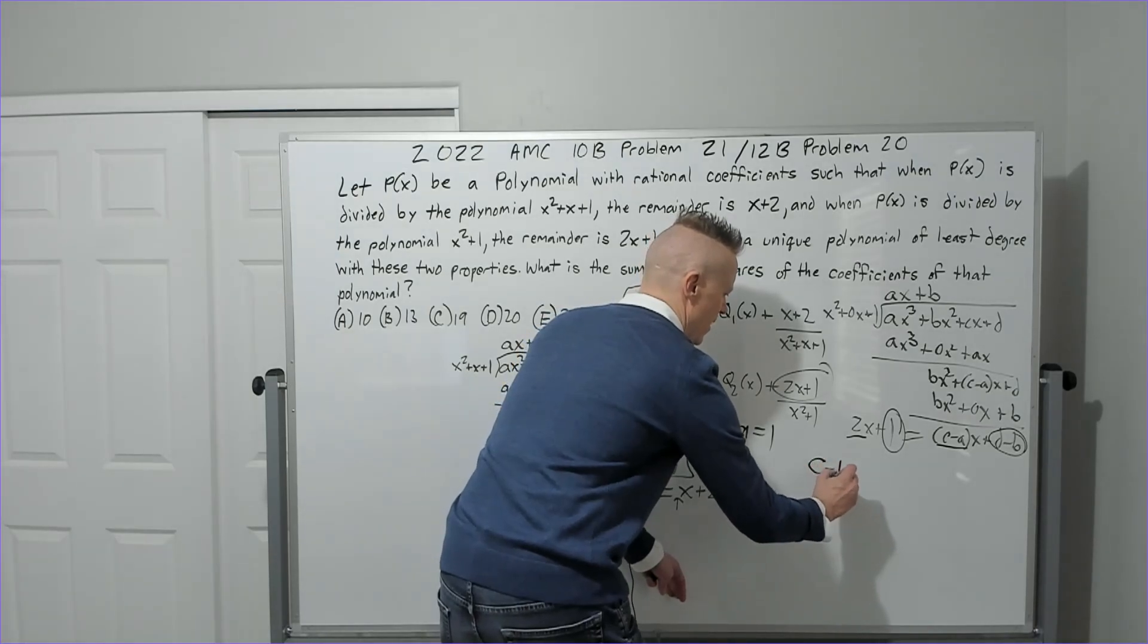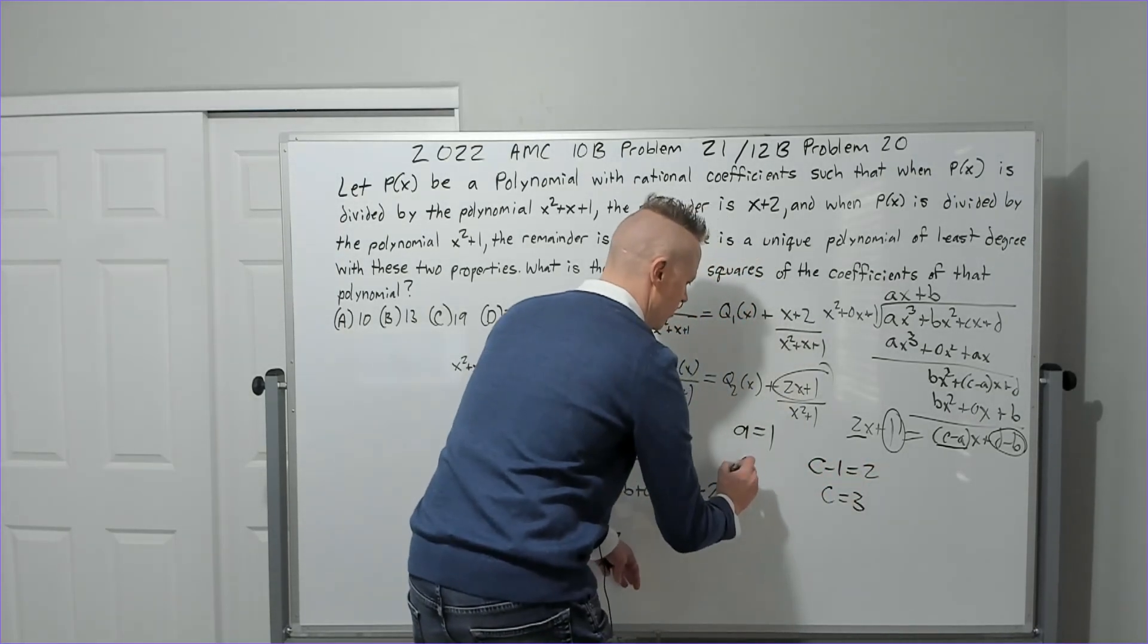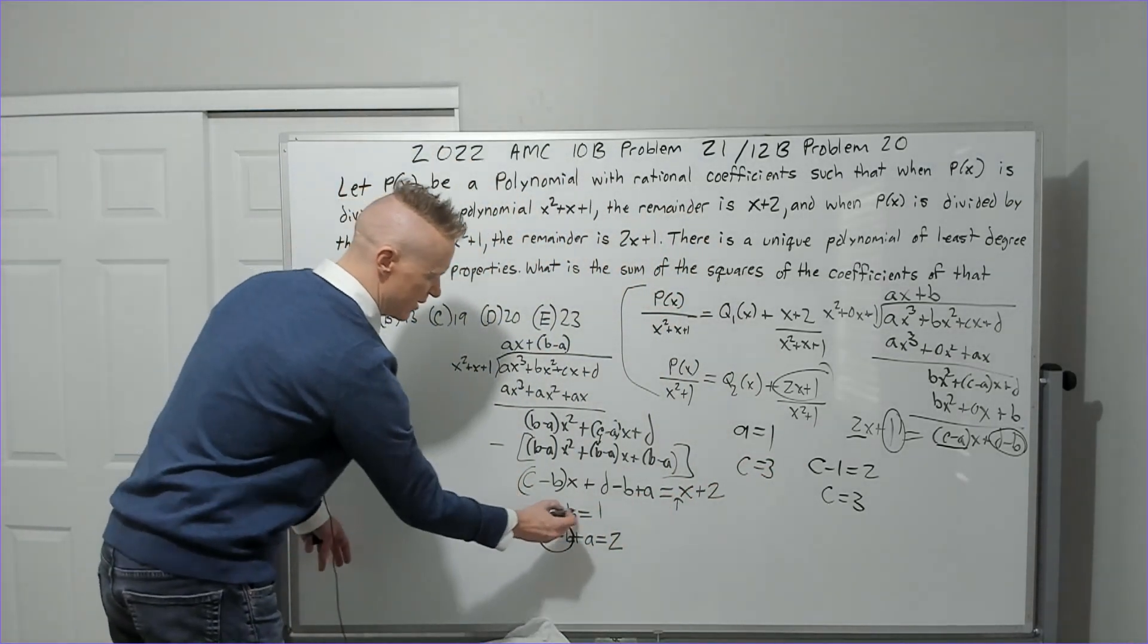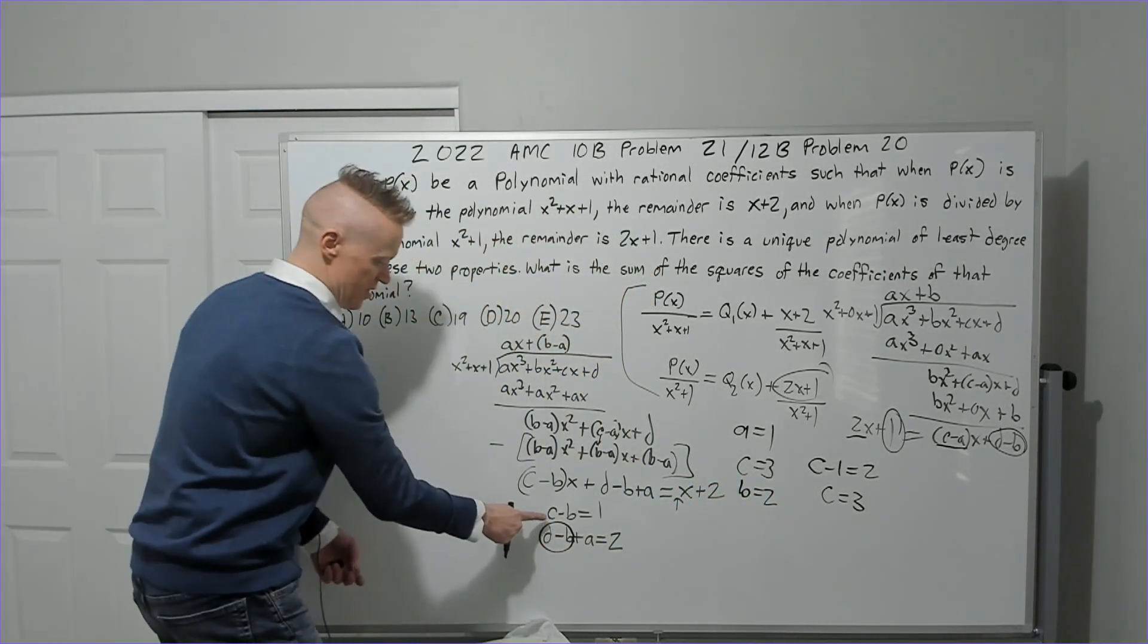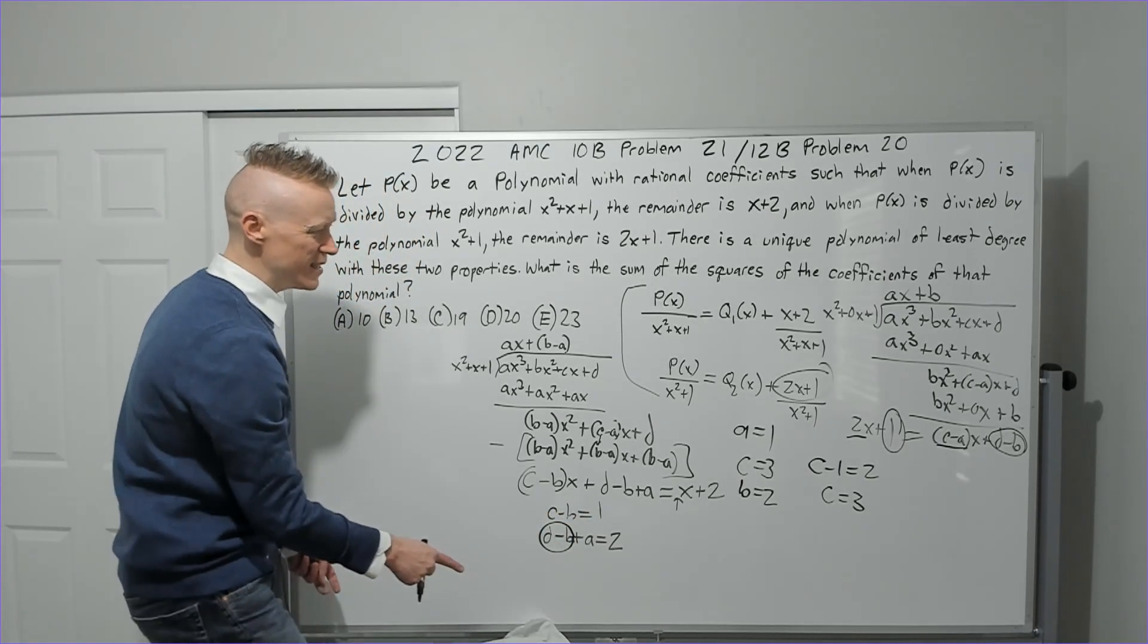So we know that a is 1. So if c minus 1 is 2, then c must equal 3. Okay, if c is 3, we come back over here. We can see that b must be 2. b will be 2 then. 3 minus 2 is 1.